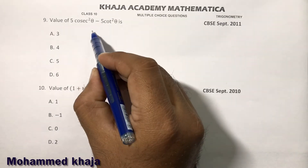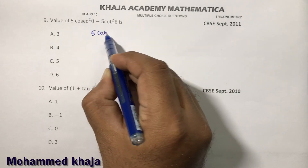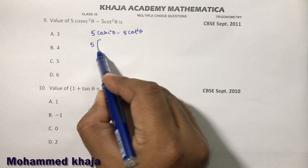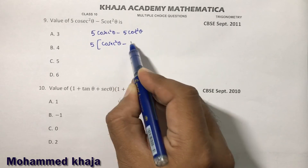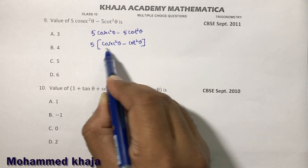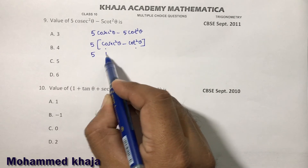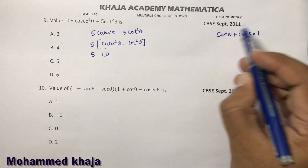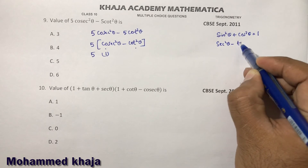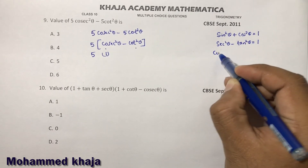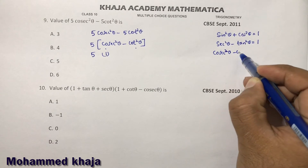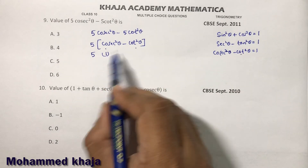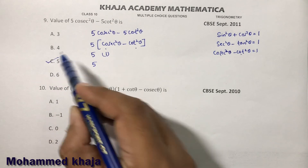Find the value of 5 cosec squared theta minus 5 cot squared theta. Take 5 common, leaving cosec squared theta minus cot squared theta. Using the trigonometric identity, cosec squared theta minus cot squared theta equals 1. So 5 times 1 equals 5. The correct option is C.